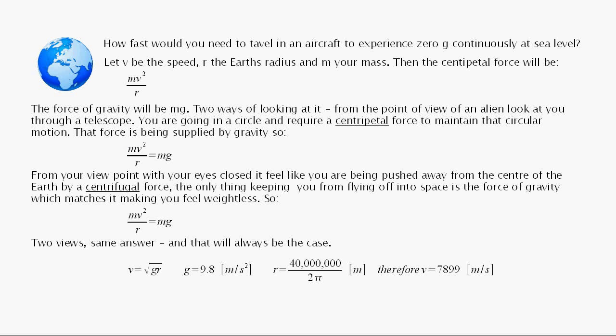Okay, here's a little example to illustrate all that. How fast would you need to travel in an aircraft to experience zero-g continuously at sea level? And we all know you can get zero-g momentarily if you put this out into a parabolic arc. Well, this is flying straight and level continuously. Starting off, flying at straight and level, you're basically in orbit. How fast do you have to go to experience zero-g? The force due to gravity is going to be mg, as usual.